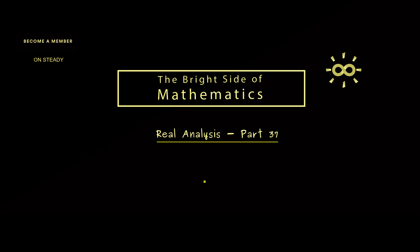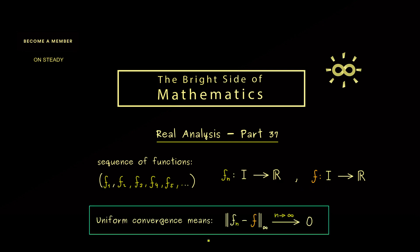For this, please recall what we already know about uniform convergence. It applies to a sequence of functions fn with the common domain I. Then we can have a limit function we simply call f. The short formulation for uniform convergence we've already learned is given by the supremum norm. So the supremum norm of fn minus f goes to 0 when n goes to infinity.